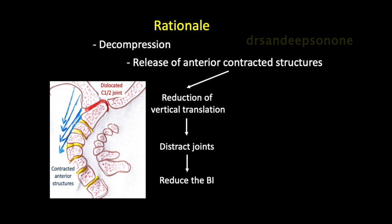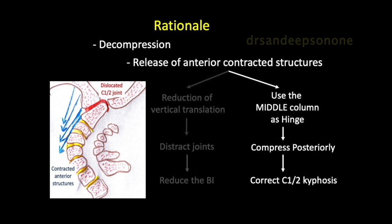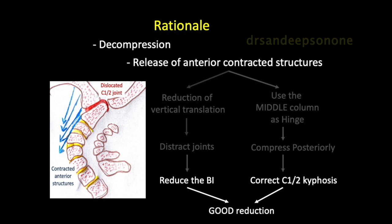When doing the decompression, we release the anterior contracted structures — the longus colli and facet joint capsules — along with removal of bony osteophytes. That causes a reduction of vertical translation and distracts the joint, reducing the basilar invagination, that is the tip of the odontoid into the foramen magnum. We can also use the middle column as a hinge — the strong contracted ligaments — and compress posteriorly to correct the C1-C2 joint kyphosis.